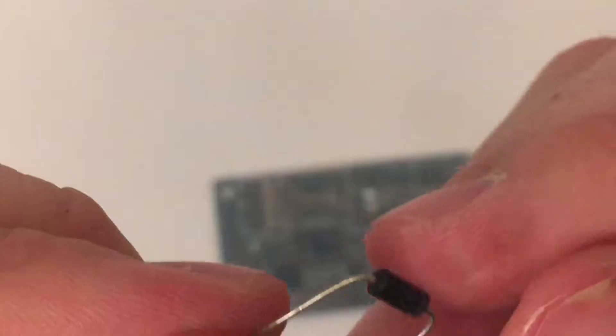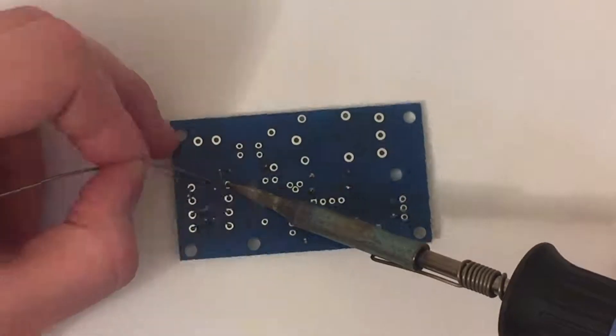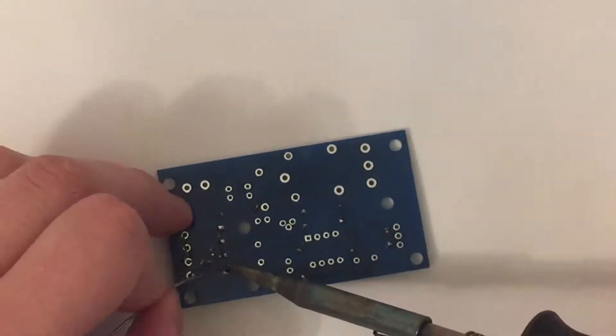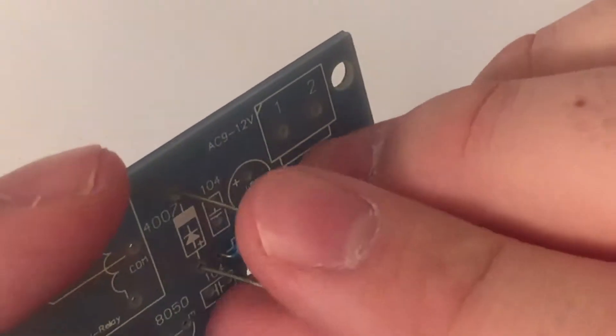Just bend the legs with your fingers and then insert the part. Afterwards solder the diodes in place. Repeat the steps for all other diodes and don't forget to add this fifth one.